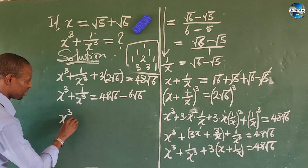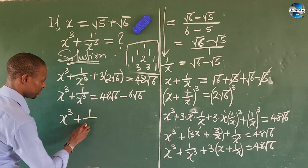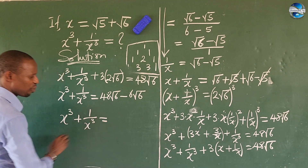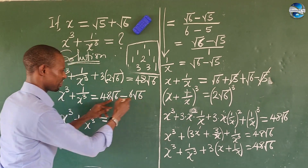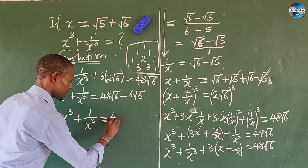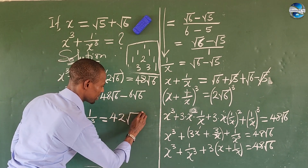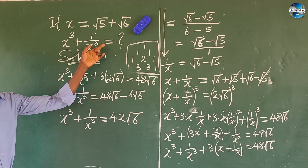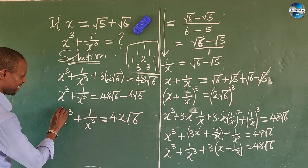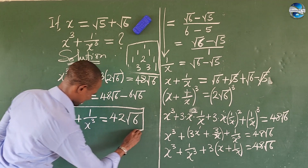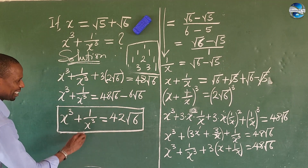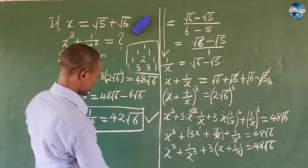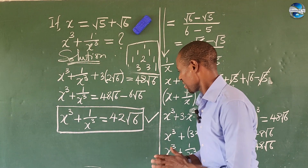So x to the power of three plus 1 all over x to the power of three is equal to 48√6 minus 6√6, which equals 42√6. This is our answer to this US Math Olympiad question.